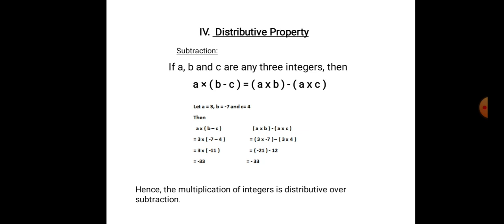Now, let us check distributive property under subtraction. If a, b and c are any three integers, then a into (b minus c) is equal to a into b minus a into c. Here, a is being distributed to both b and c even under subtraction. Example: a is equal to 3, b is equal to minus 7 and c is equal to 4. Substituting these values, a into (b minus c) is equal to 3 into (minus 7 minus 4). Minus 7 minus 4 is minus 11. 3 into minus 11 is minus 33.